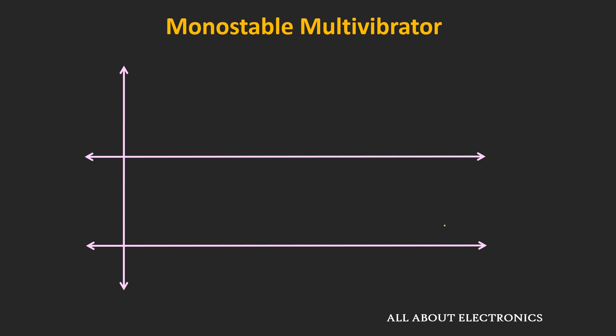In this multivibrator, the output remains in the stable state. But whenever some external trigger signal is applied, then output momentarily goes into the unstable state. And after some time, it comes back into the stable state. The time required to come back into the stable state depends upon the passive components like R and C. By selecting this R and C, we can decide the time for which the output will remain in the unstable state.